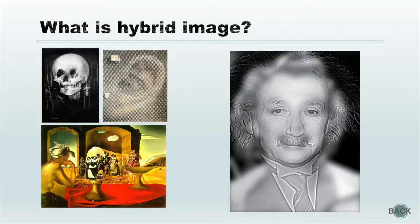A hybrid image is a single picture that combines the low spatial frequency of one image with the high spatial frequency of another image, producing a new image with an interpretation that changes with viewing distance or size.